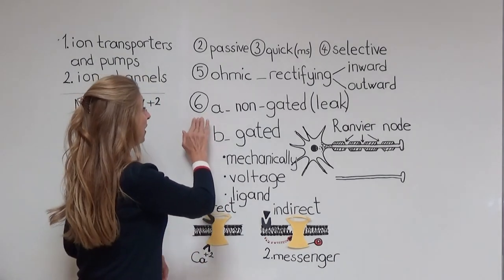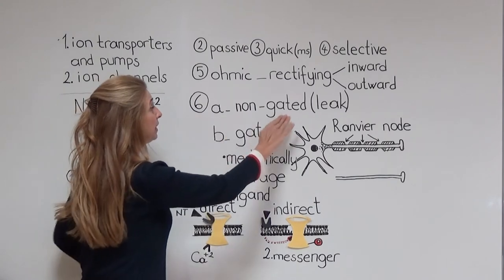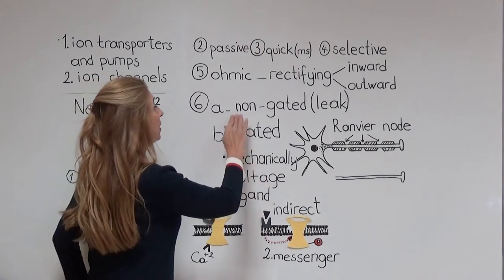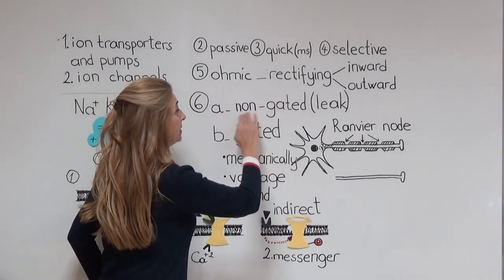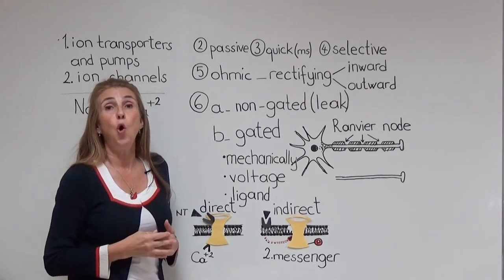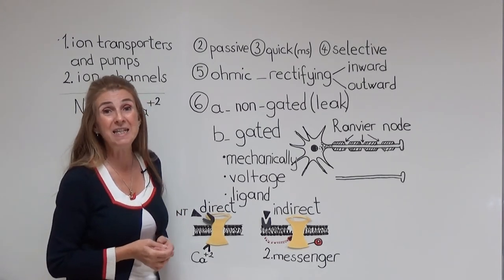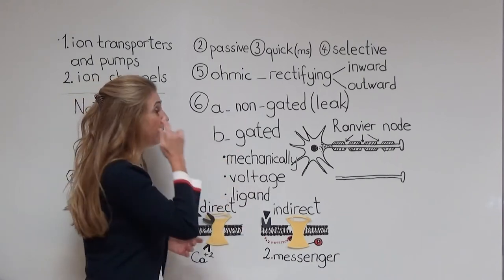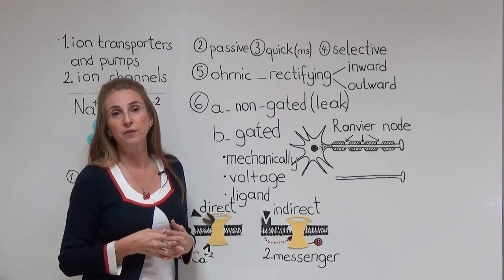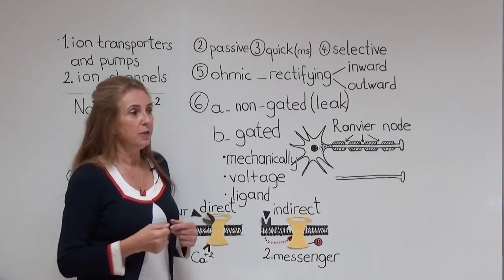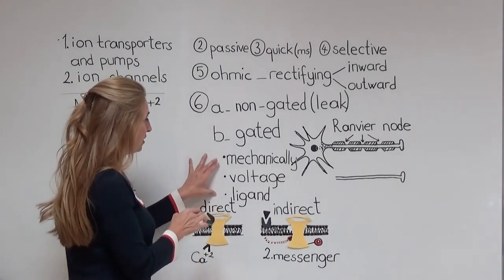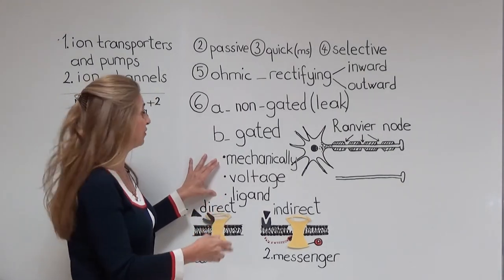Another classification of ion channels can be made depending on whether they are gated or non-gated. The first group is non-gated channels, meaning they are open all of the time — they are also called leak channels. The second group are gated channels. In the case of gated channels, some conditions must be met for the channel to open. We have three types of conditions opening three different types of gated channels.